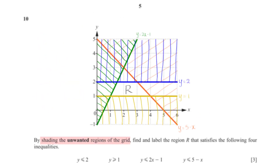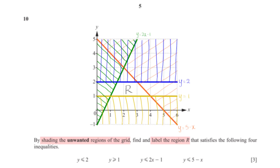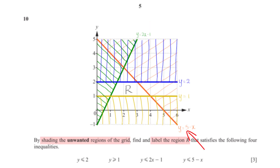By shading the unwanted regions of the grid, find and label region R satisfying: y ≤ 2, y ≥ 1, y ≤ 2x minus 1, and y ≤ 5 minus x. To answer this, we first draw the lines for these inequalities: y = 2, y = 1, y = 2x minus 1, and y = 5 minus x. Since all inequalities include the equal sign, all lines will be solid straight lines.